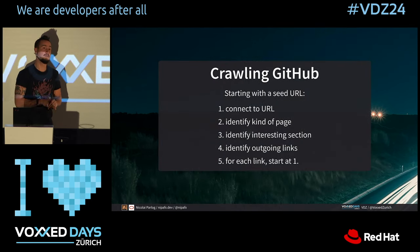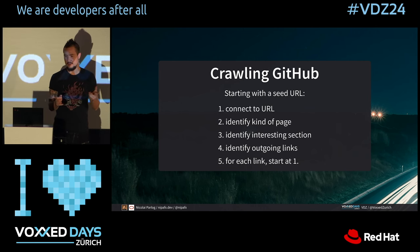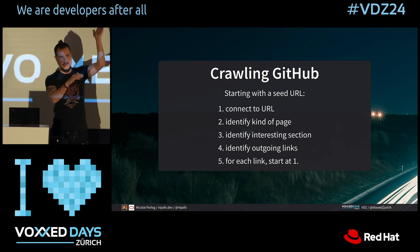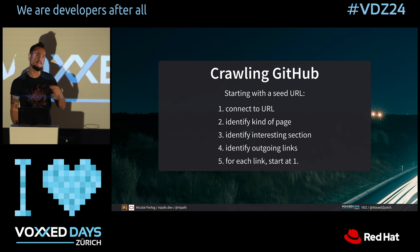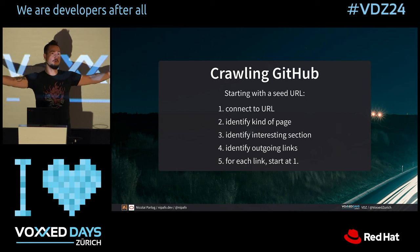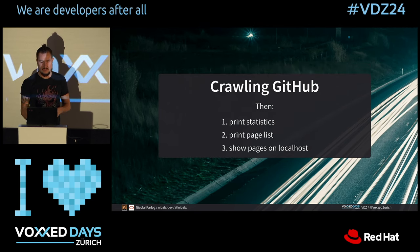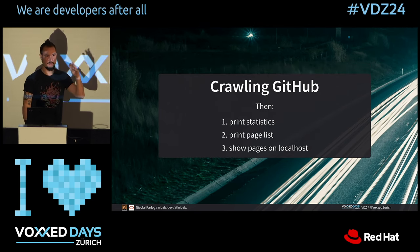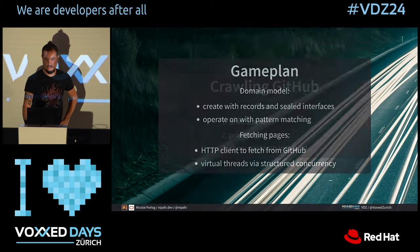We're going to write a little GitHub crawler that connects to a URL, which is hopefully a GitHub URL, tries to identify whether it's a pull request page, an issue page, or some other kind of page, looks for the interesting section — not the header, not the footer, just the part where the issue conversation happens — finds outgoing links, and feeds all of those links back into step one. If it finds a link that goes to an external page like Wikipedia, it stops. If there's an error, it stops there as well. Then we'll print some statistics and create a nice page list.